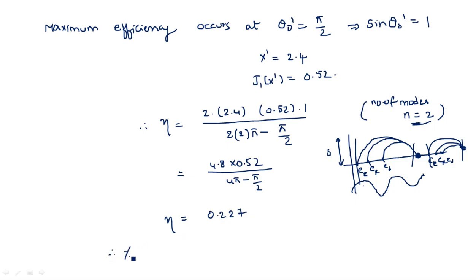Therefore the maximum percentage efficiency η = 22.7%. This is the maximum efficiency of the reflex klystron oscillator for the output oscillations that are generated.